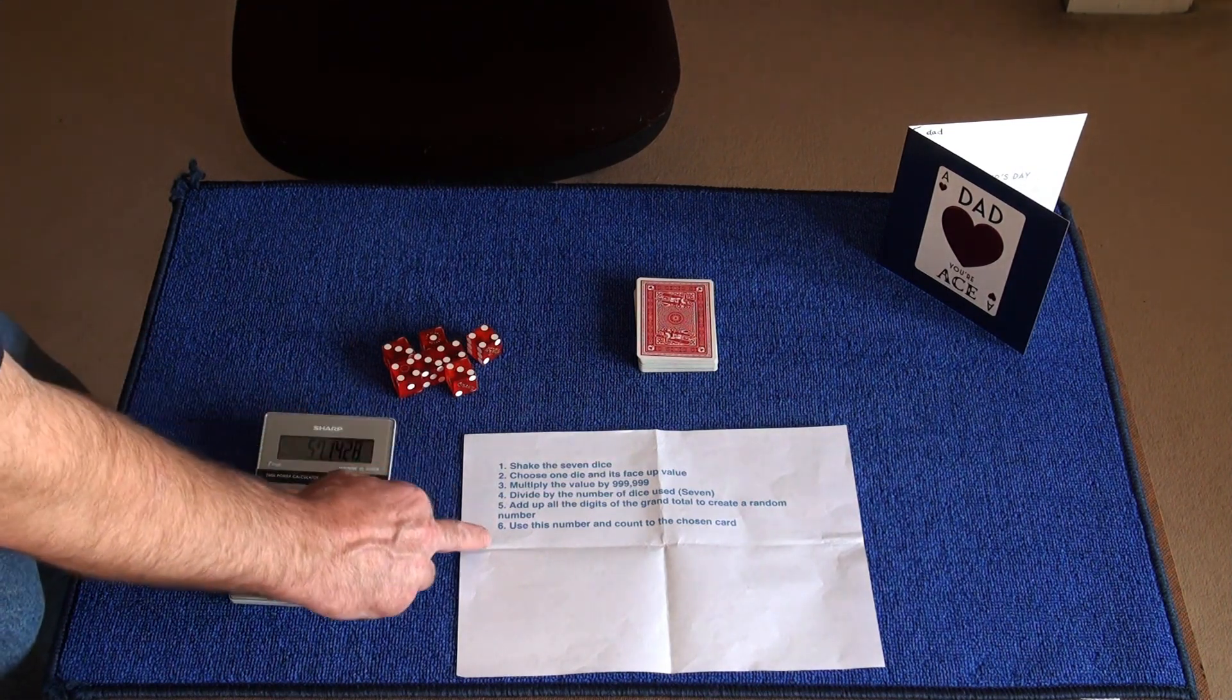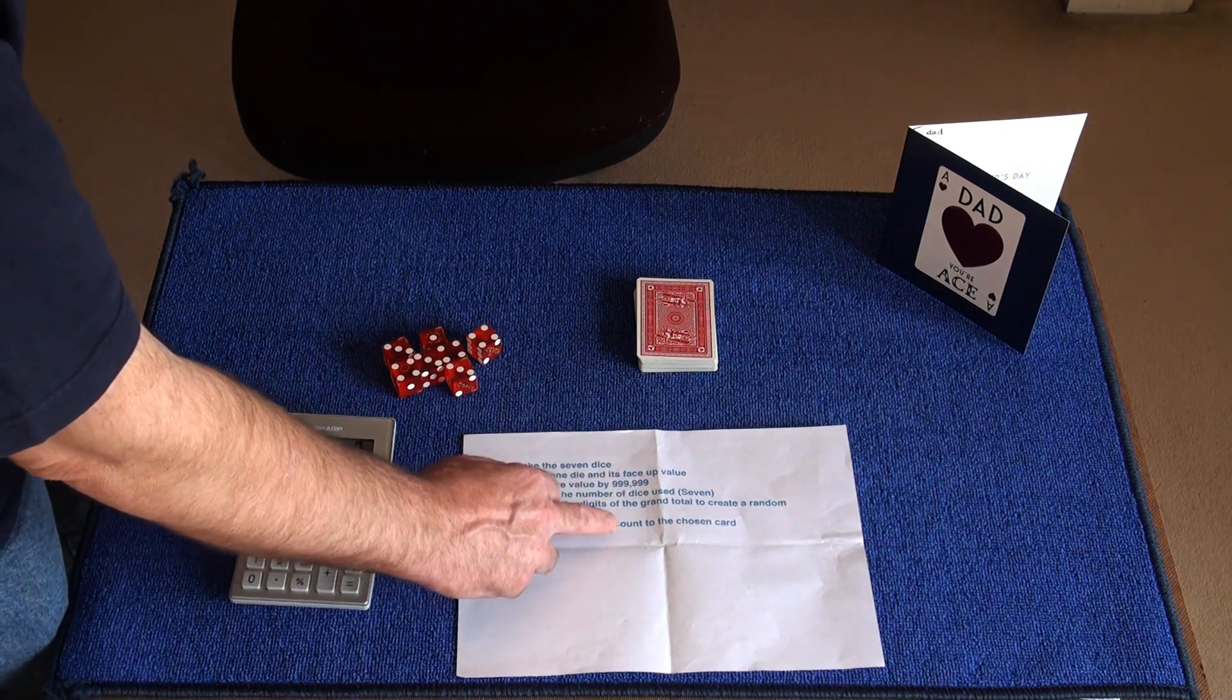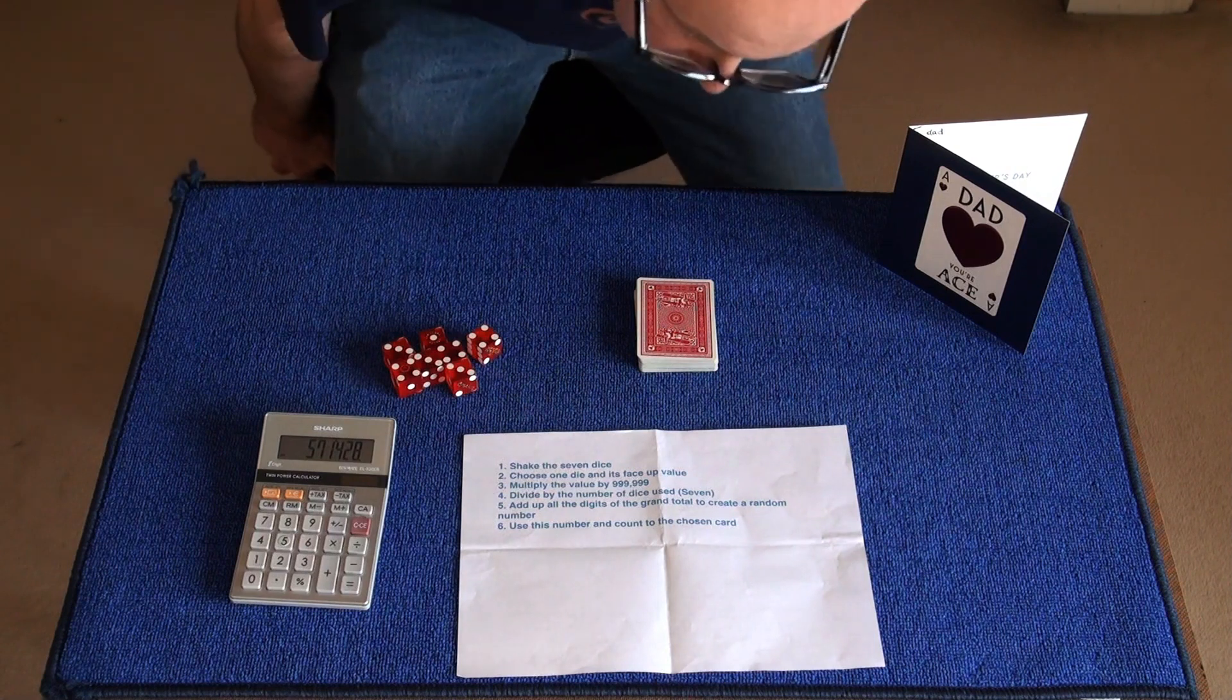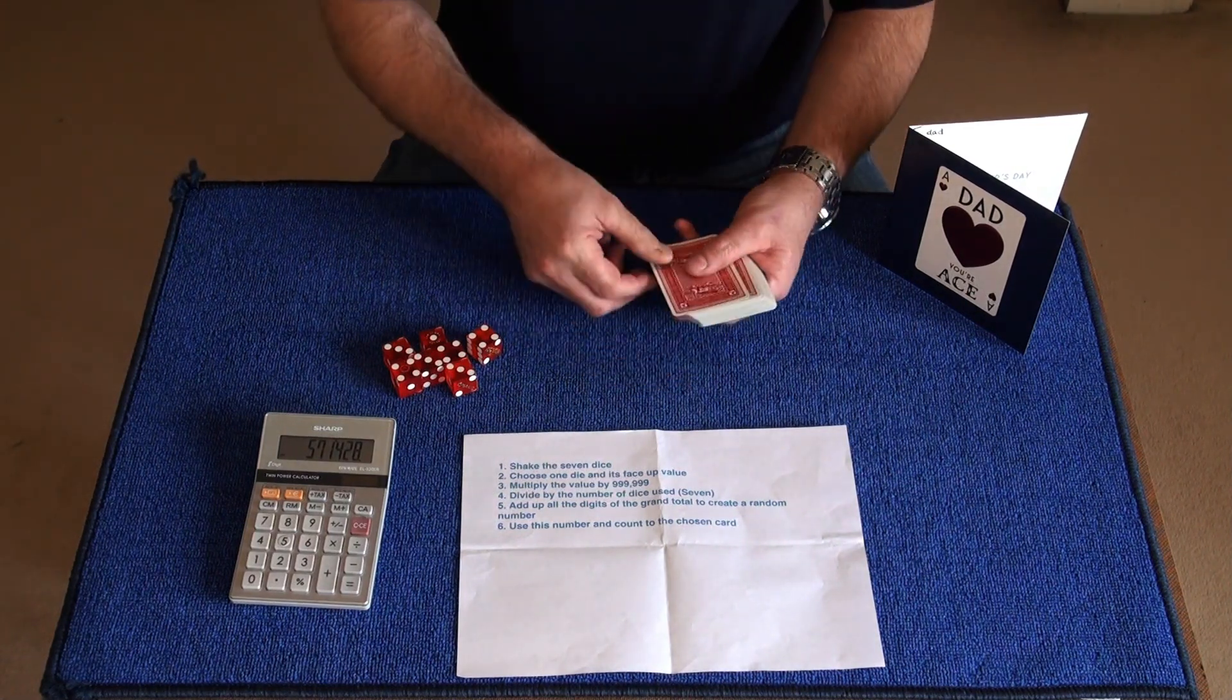Then it says step six: use this number and count to the chosen card. So we've got 27, so we go.